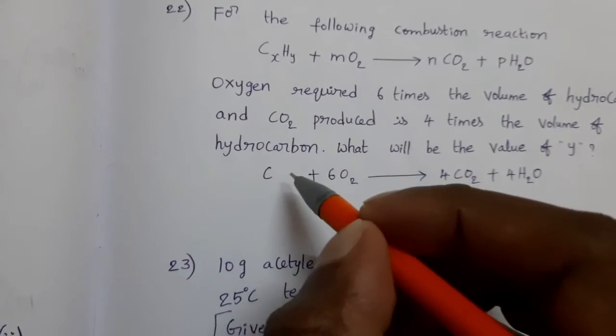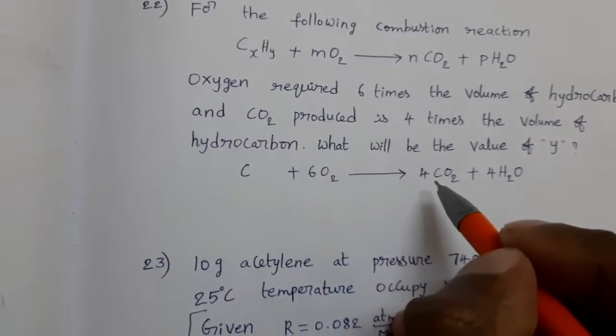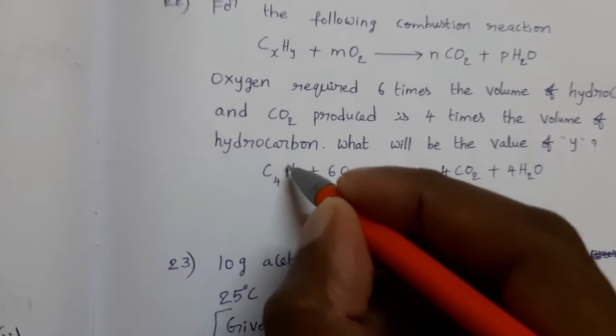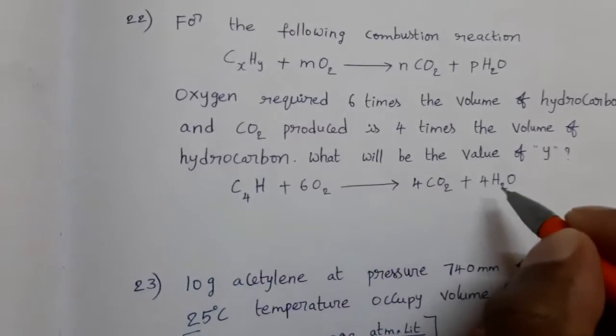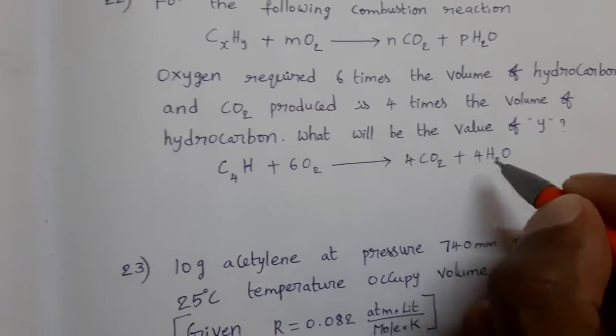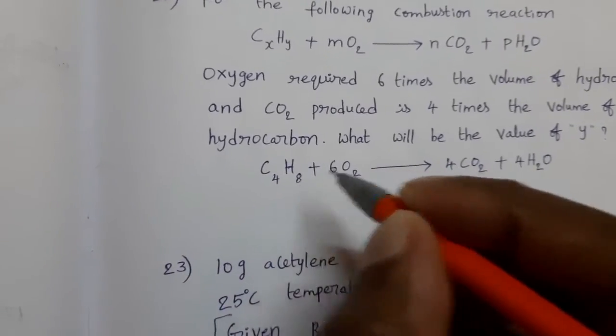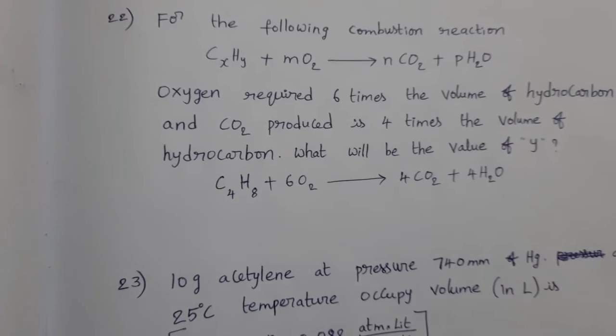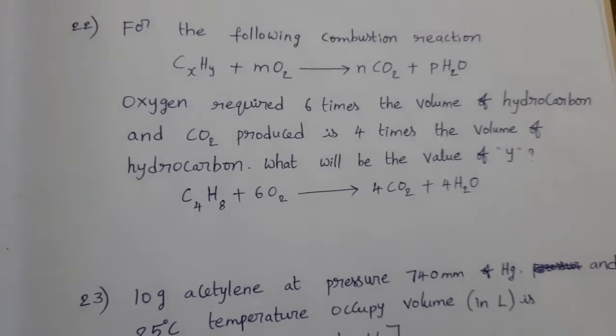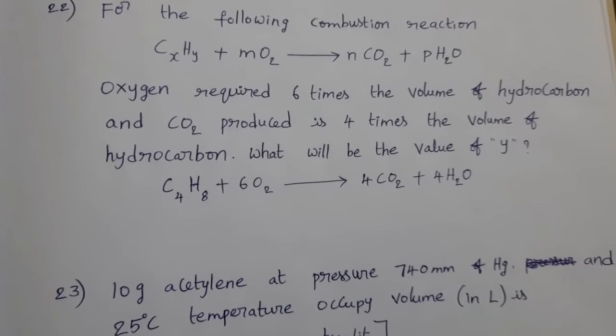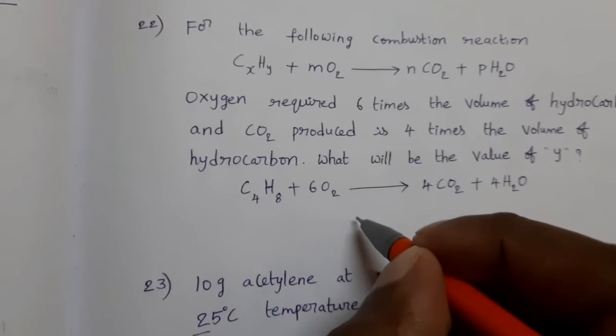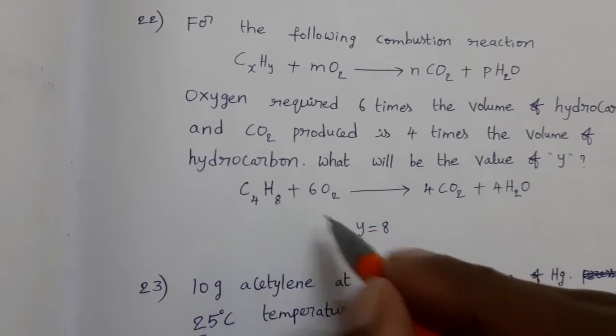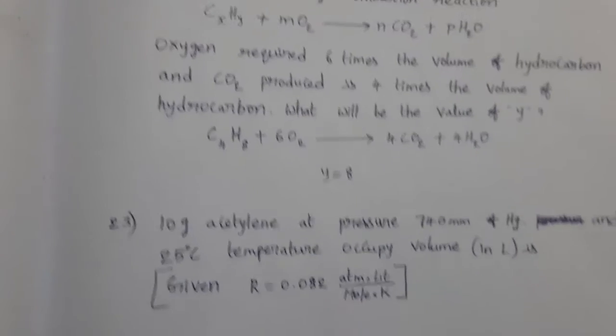Now, come to the hydrocarbon formula. How many carbon atoms? 4. C4. Product side, how many hydrogens? 4 into 2, 8. Final equation is C4H8 plus 6O2 gives rise to 4CO2 plus 4H2O. Now, what is the value of Y? That equal to 8. This value we want. Y equal to 8.